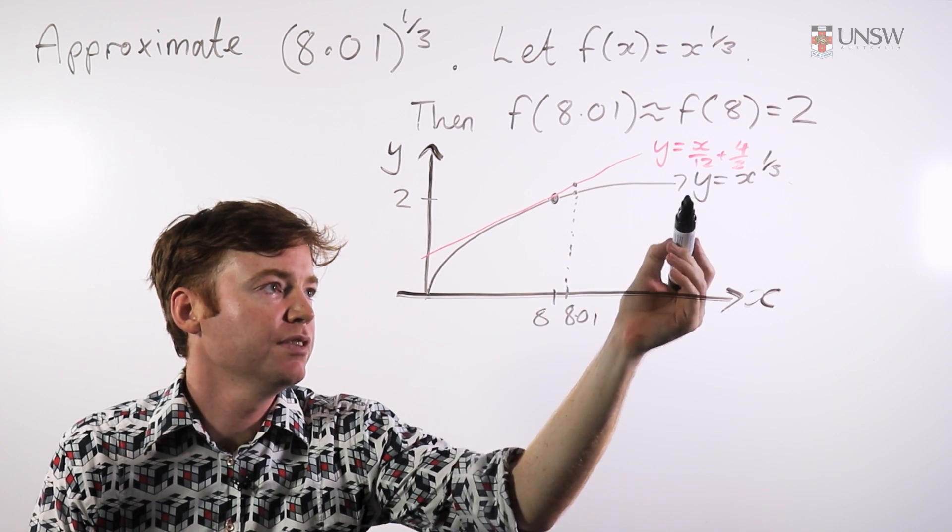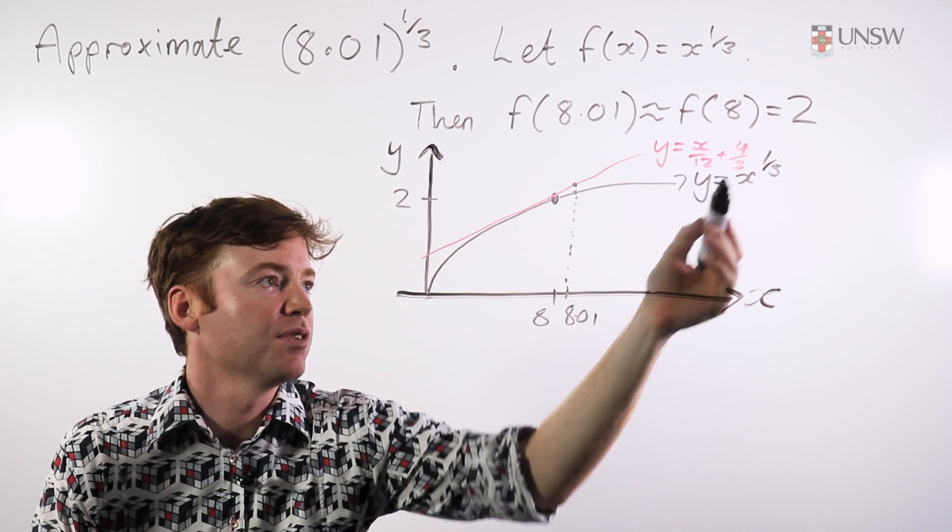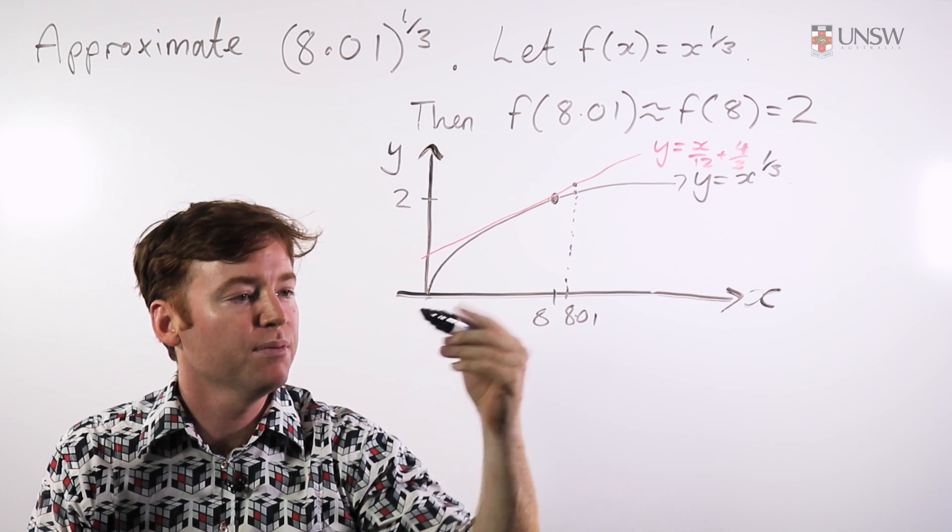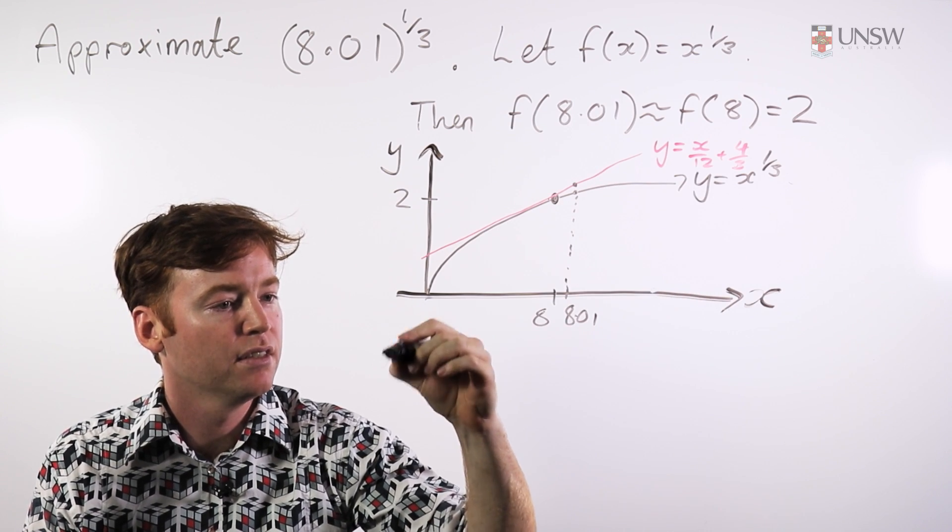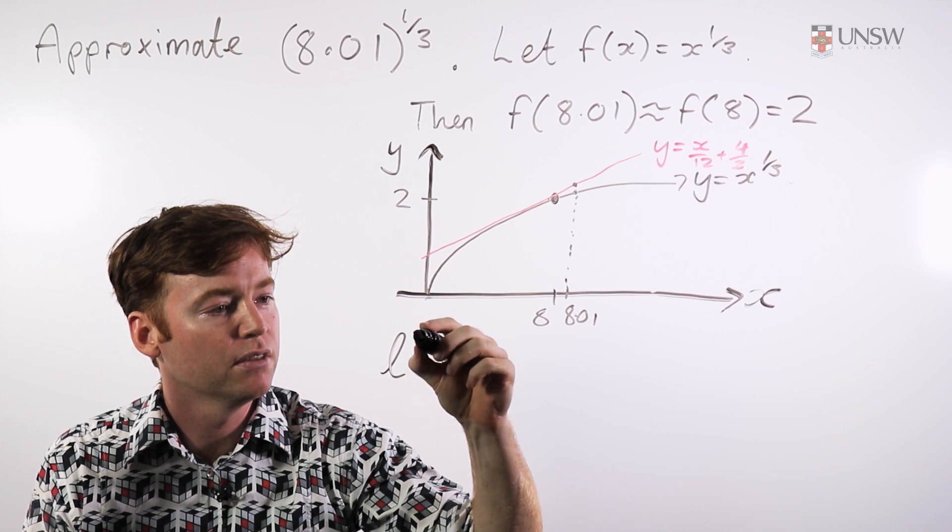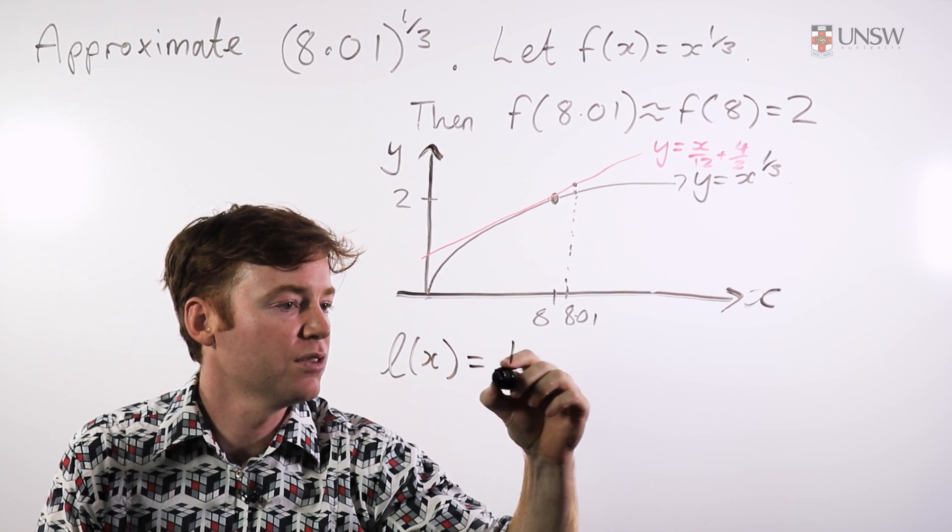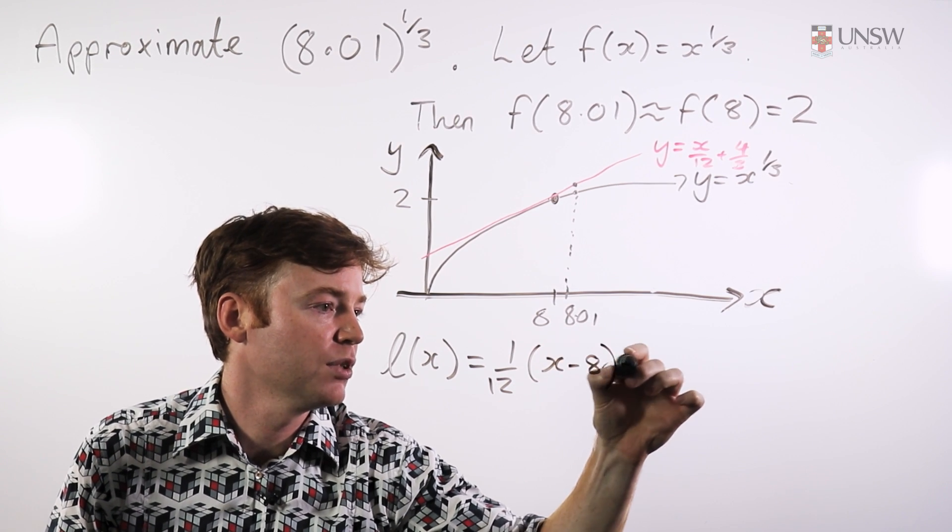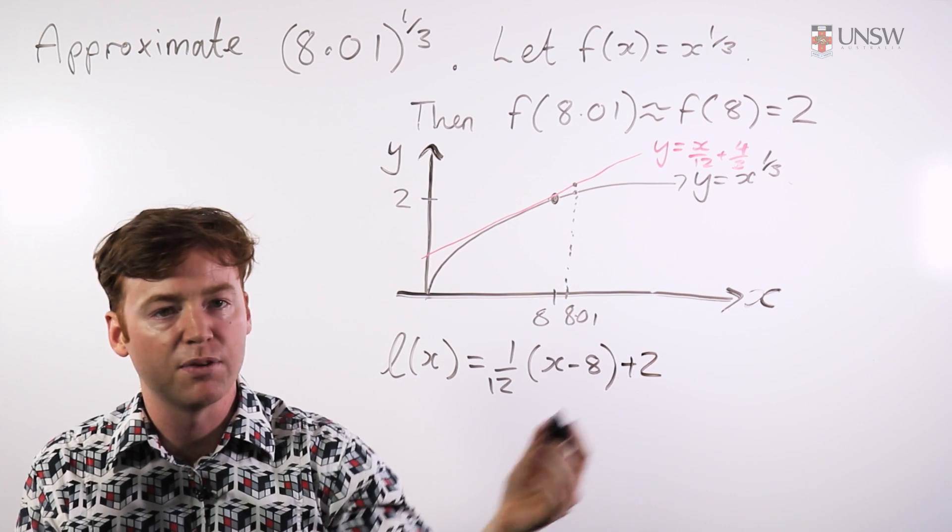So here I have a graph of the function y equals x to the one-third and the tangent. And I might just write the tangent like this. Let's call it l of x, and I'll write it in the form one-twelfth of x minus 8 plus 2. So this is the equation of my tangent.